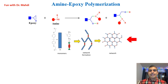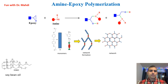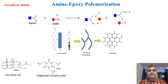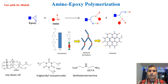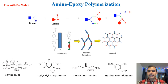After polymerization, we will have a polymer like this. There are many compounds with epoxy or amine groups that can be used for polymerization. For example, soybean oil is a monomer — in the structure of soybean oil you can find six epoxy groups. Or we can use triglycidyl isocyanurate, which has three epoxy groups. If you are looking for a monomer with amine groups, you can use diethylenetriamine with two amine groups, or m-phenylenediamine with two amine groups. There are many chemicals with epoxy or amine groups — I just wanted to give you some examples.